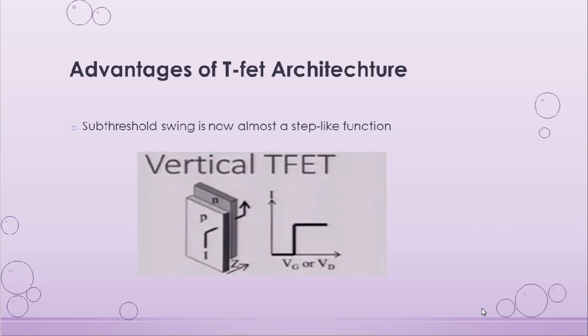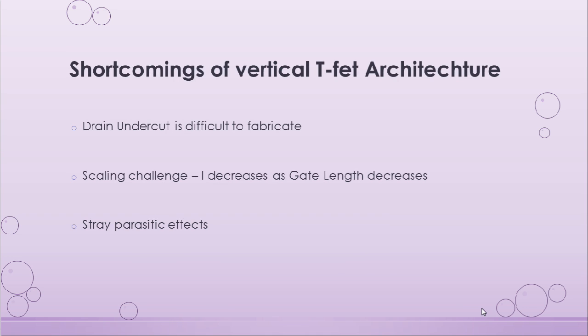Let us take a look at the advantages of the vertical TFET architecture. The major advantage is that the subthreshold slope is almost like a step function, meaning the controllability of the drain current via the gate voltage has greatly increased. Now let us look at the shortcomings. The most important shortcoming is that the drain undercut seen in the vertical TFET architecture is very difficult to fabricate. Additionally, it poses some scaling challenges — the drain current actually decreases as the gate length decreases, which opposes Moore's law. Finally, we also have to take stray parasitic effects into account.